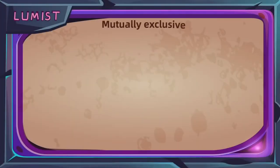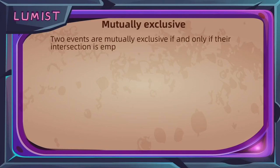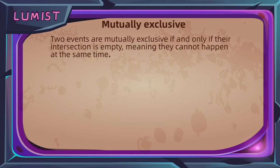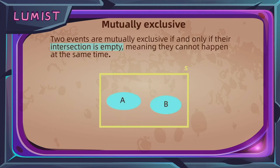A property related to intersection is called mutually exclusive. Intuitively, this refers to two events that have no possibility of happening together. In other words, their intersection is empty. On the Venn diagram, this refers to two circles — two events — not touching at all, so we do not have any overlap between them.